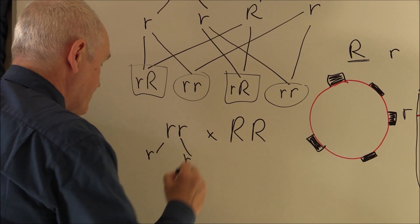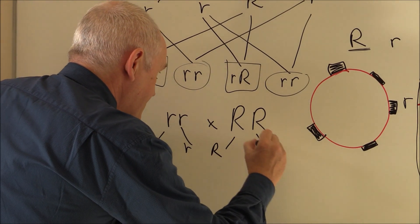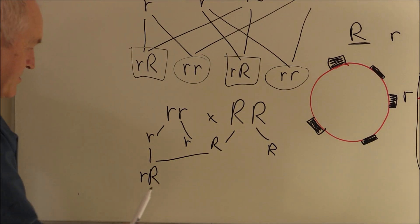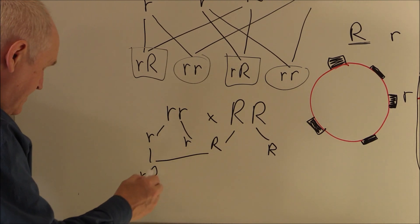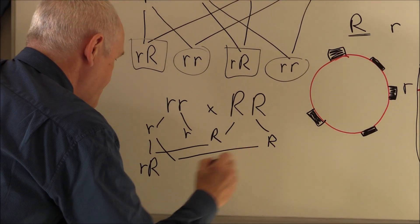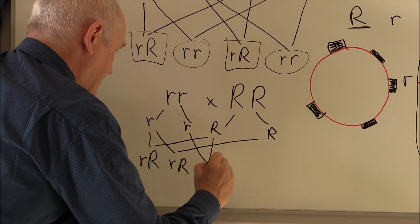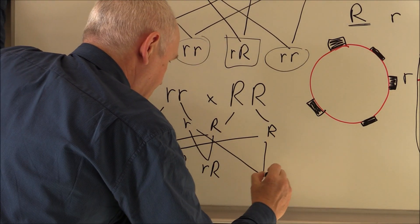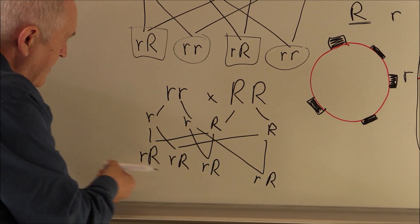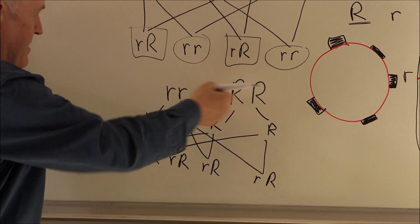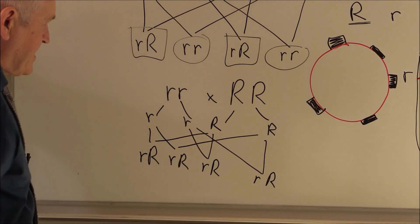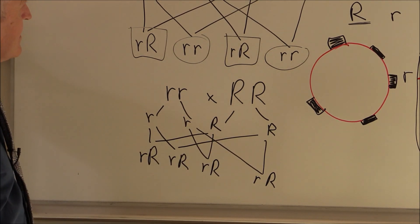In this case, the mother produces ova, the father produces sperm. So this could combine with that one, giving us Rr. Because there is one copy of the Rhesus positive gene, that is going to give us a Rhesus positive fetus. Likewise with this possible combination. In fact, likewise with that one. So in this case, even though the mother is Rhesus negative, 100% of potential fetuses formed by this union would be Rhesus positive. Therefore, the probability of Rhesus factor incompatibility occurring is going to be high.